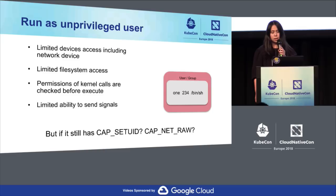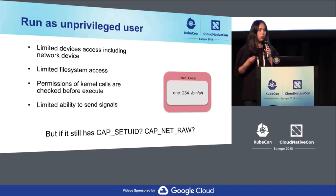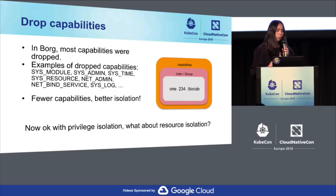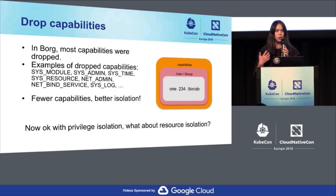But those processes still potentially have dangerous capabilities. For example, they could set UID on files if they have the CAP_SETUID capability, or open raw sockets if they have CAP_NET_RAW. So in Borg, by default, we drop most capabilities. The job can request particular capabilities to perform particular tasks.